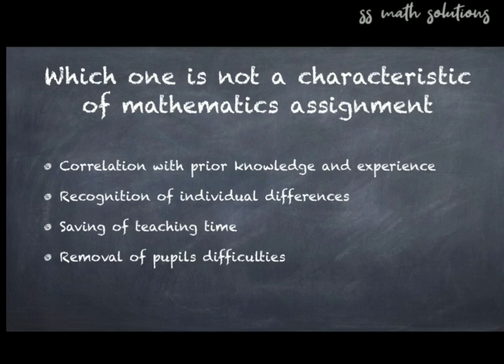Question 25: Which one is NOT a characteristic of a mathematics assignment? Options: correlation with prior knowledge and experience, recognition of individual differences, saving of teaching time, removal of difficulties. The answer is option three — saving of teaching time is not a characteristic of a mathematics assignment.